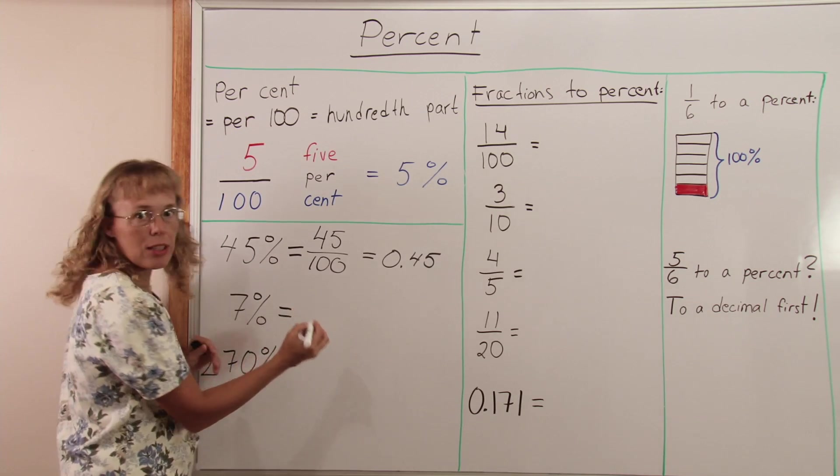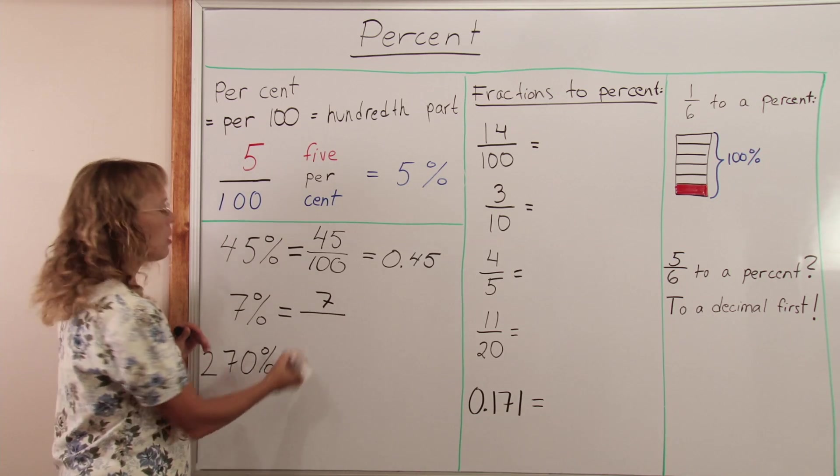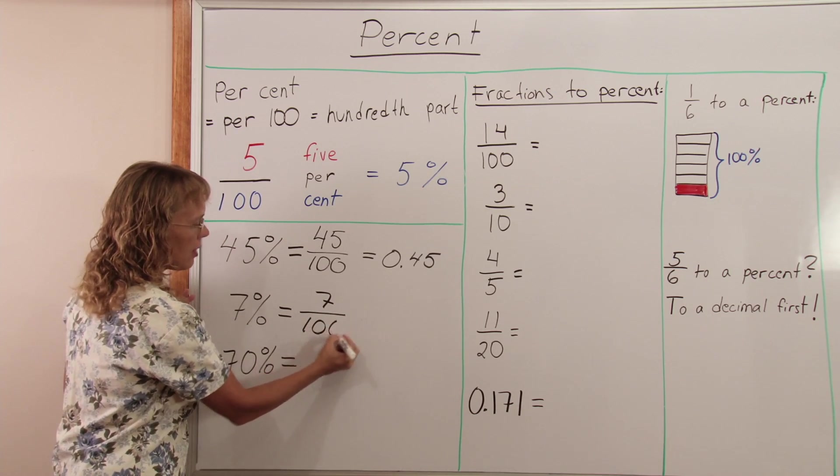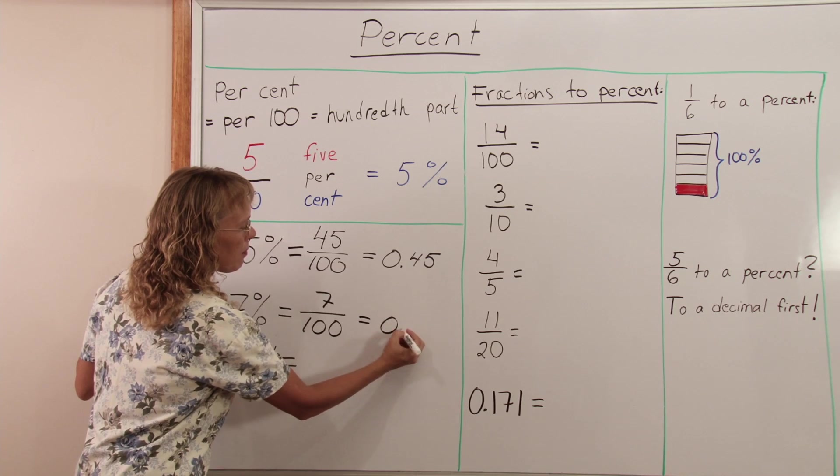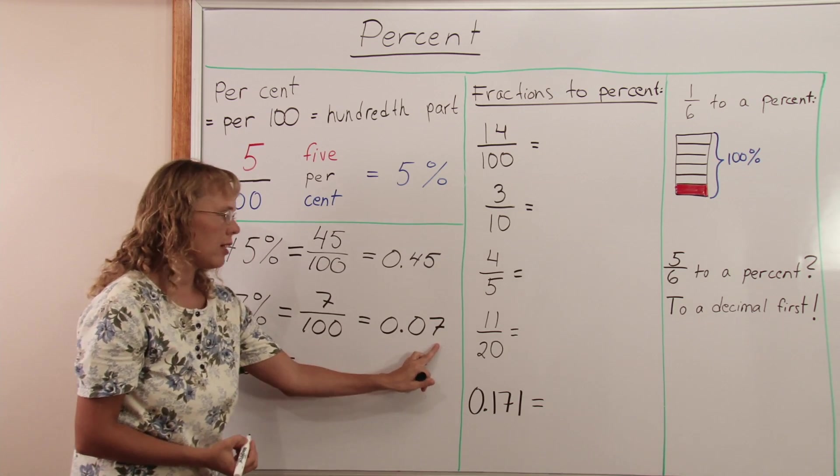7 percent. Similarly you write 7 here on top. Then your per which is the division line and then cent is the hundred. And as a decimal 0.07 or seven hundredths.